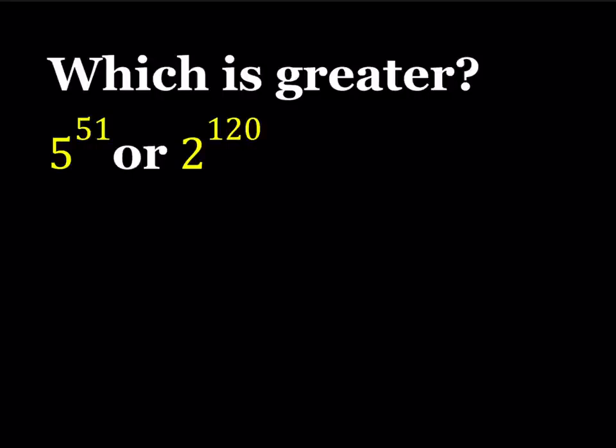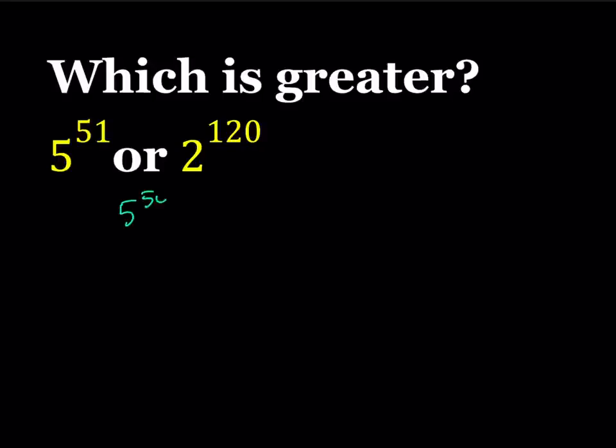Now, when you see a problem like this, probably some of you are thinking about the following. How about I take 5 to the power 50 and compare it to 2 to the power 120. Why? Because their exponents have a common factor, which is 10. So if I'm able to compare 5 to the 5th and 2 to the power 12, then I should be able to raise both of these numbers to the 10th power because the order is not going to change. When they give you something like this, that's definitely a way to go.